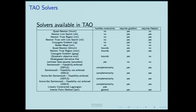Here's a summary of some of the methods in TAU — whether they handle constraints and whether they require gradients and Hessians. There's a variety of semi-smooth methods, active set methods, and constrained Lagrangian interior point methods.